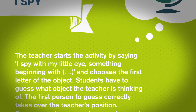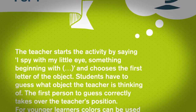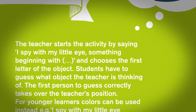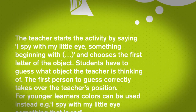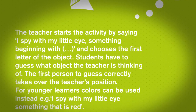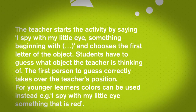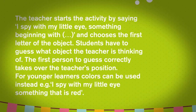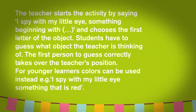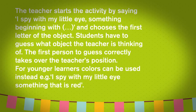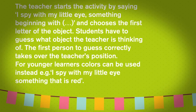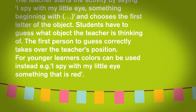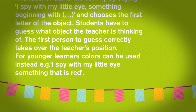I Spy. The teacher starts the activity by saying "I spy with my little eye something beginning with" and chooses the first letter of the object. Students have to guess what object the teacher is thinking of. The first person to guess correctly takes over the teacher's position. For young learners, colors can be useful instead, for example, "I spy with my little eye something that is red."